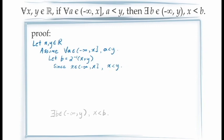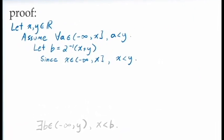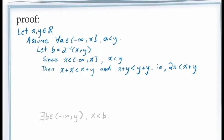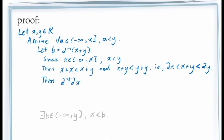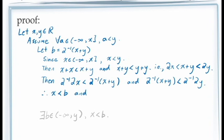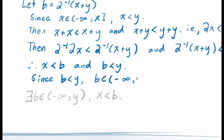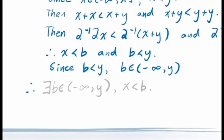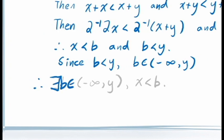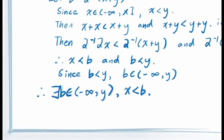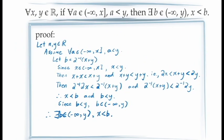Returning to our proof: we've already demonstrated x < y, so adding x to both sides on one hand and y to both sides on the other, then multiplying both inequalities by 1/2, gives us x < b and b < y. Since b < y, it's in the open interval from negative infinity to y, and we've shown by example that there is at least one value of b in that interval satisfying x < b. Since this is the consequent of the conditional statement, all that remains is to state our conclusions.